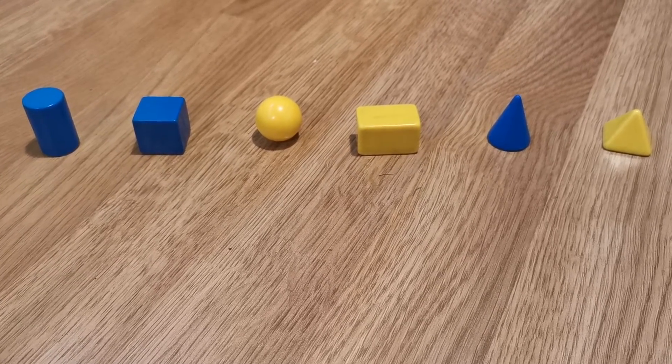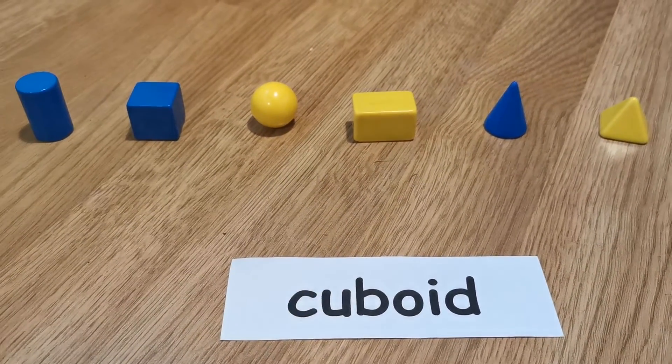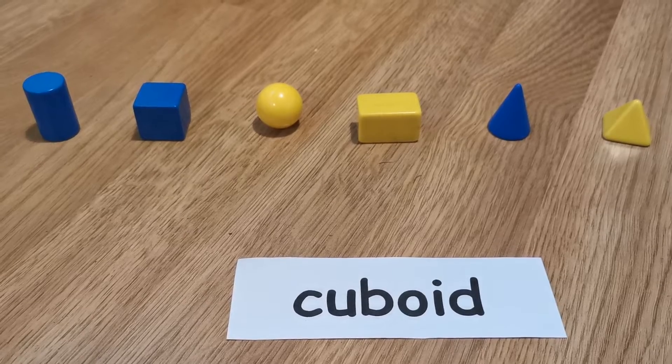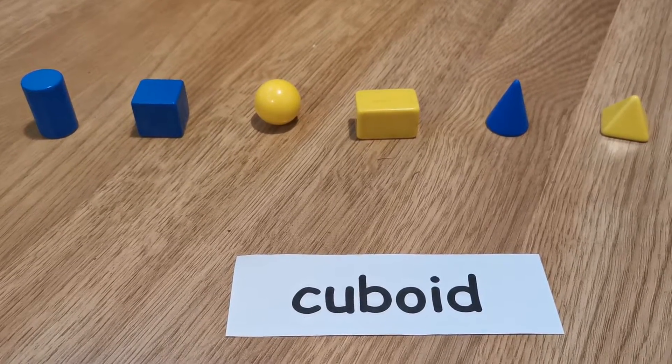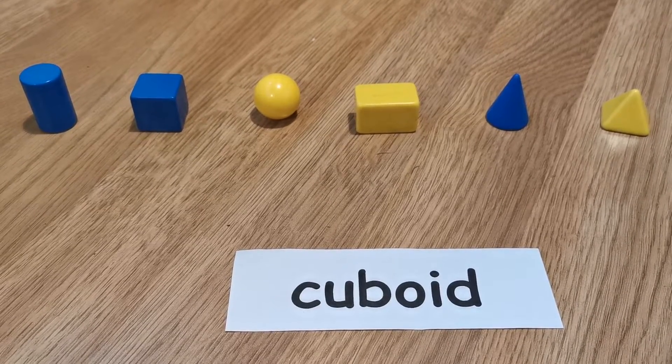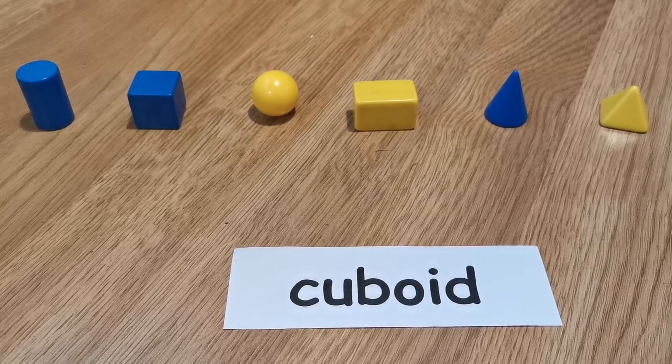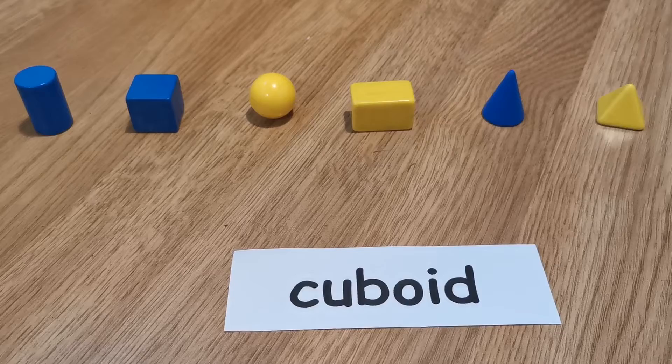So here's the first one. See if you can see what that says and point to the correct shape on the screen. OK, it says cuboid. Which one is the cuboid? Point to it. OK, next one.